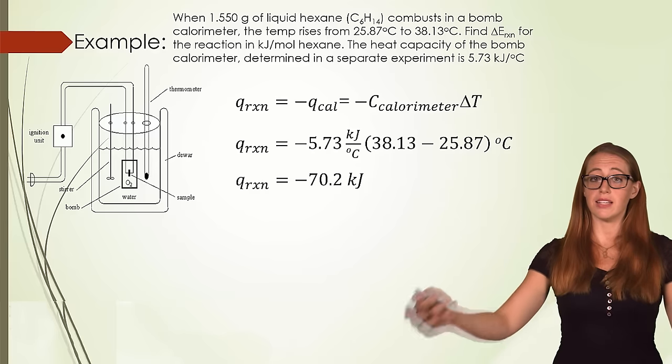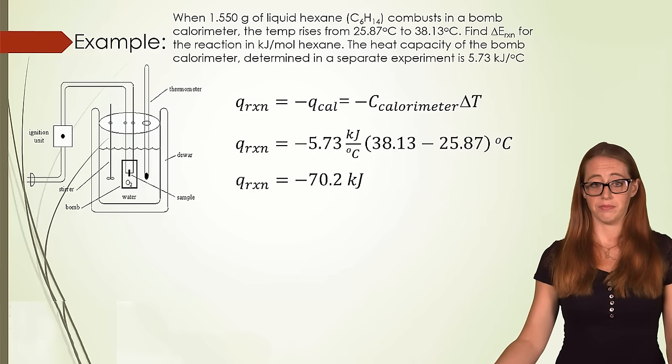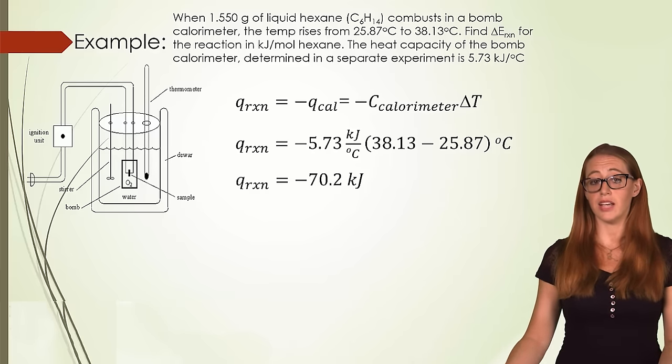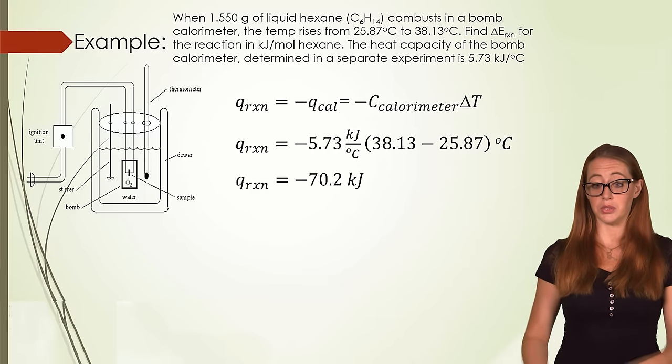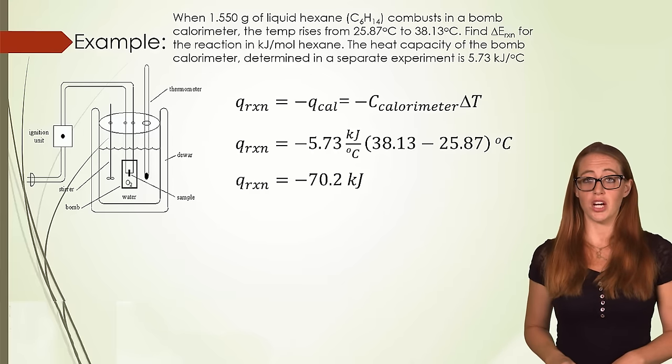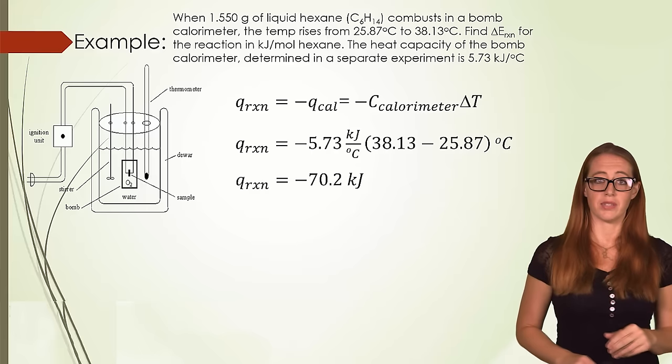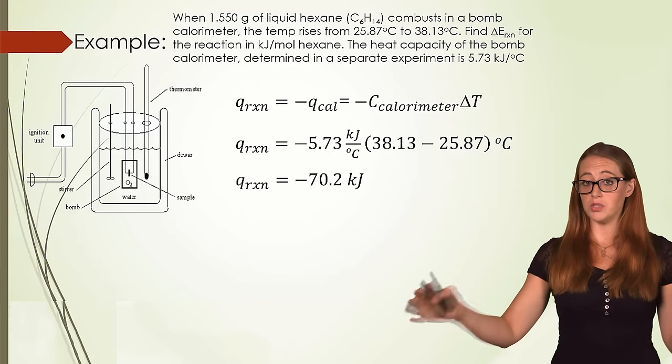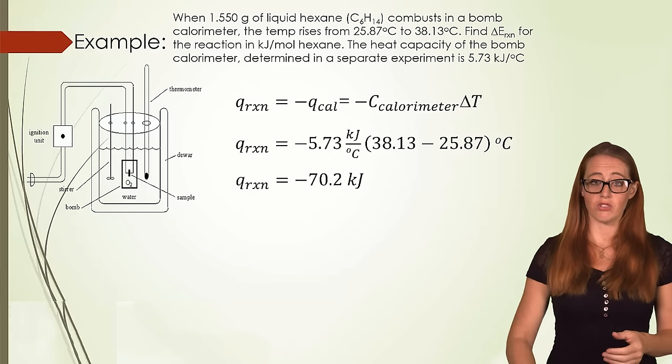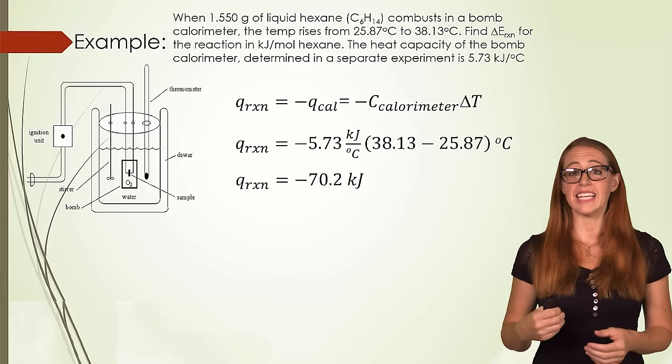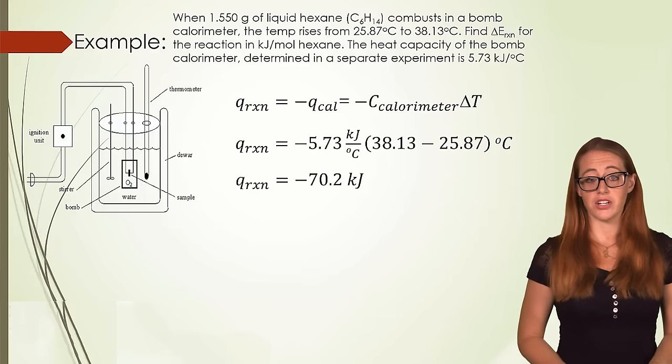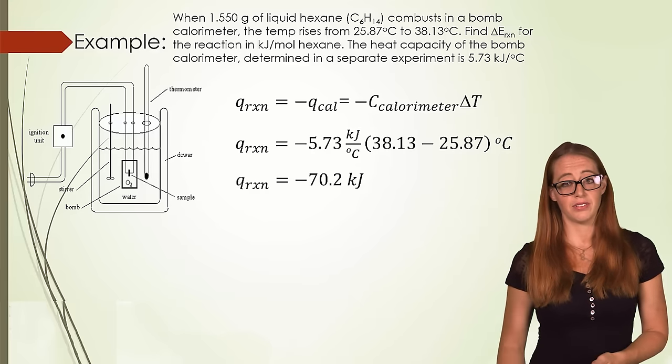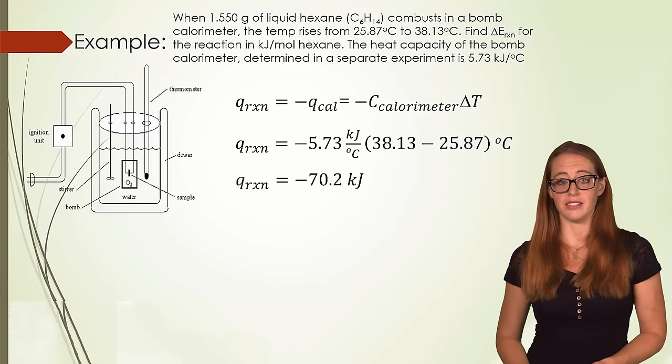We should always make sure that our signs make sense. So let's think about what we are determining and if our sign matches that. Our liquid hexane is combusting. It is releasing energy into the environment. Which means it is losing energy. Just as if you release money into the environment, you lose money, your bank account is going to drop. The same thing is true with this. The system loses energy. The energy drops. And that is a negative delta E. And we look here and sure enough, Q is negative. And we know that Q is equal to E in this situation.